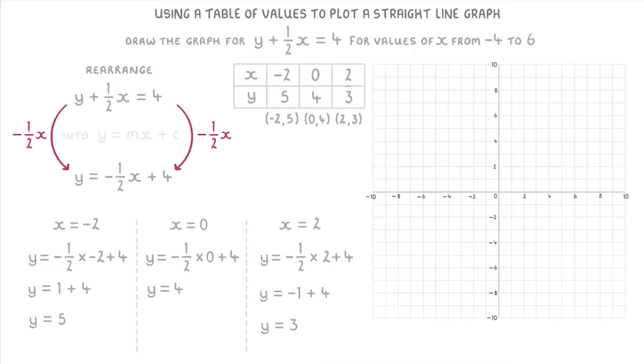And now that we know the coordinates of our three points, we can plot them all on the graph. So minus 2, 5 will be over here. 0, 4 in the middle here. And 2, 3 will be over here.